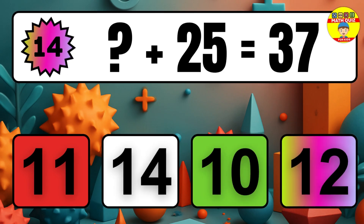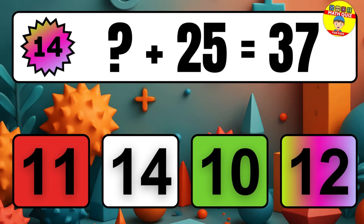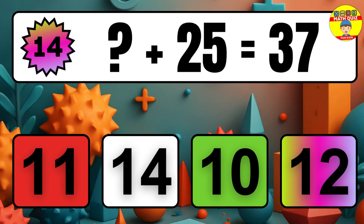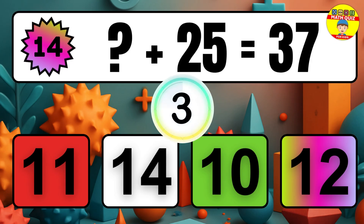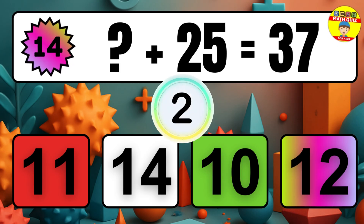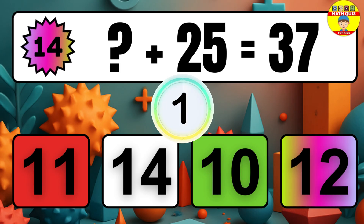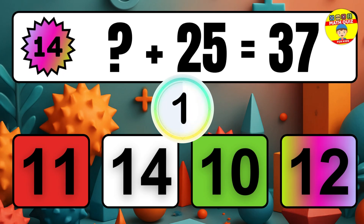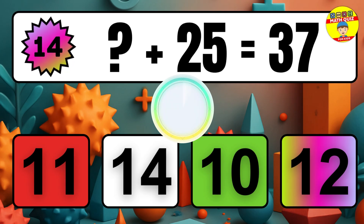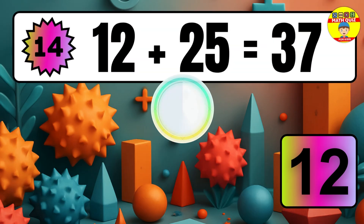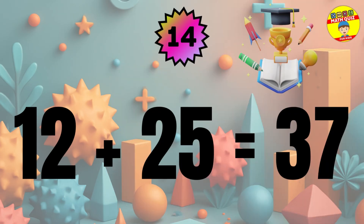Question 14. What number plus 25 equals 37? The missing number is 12.